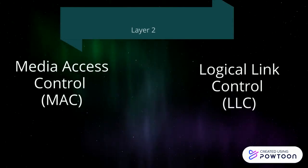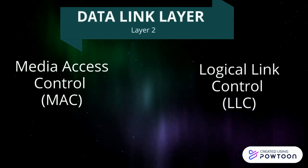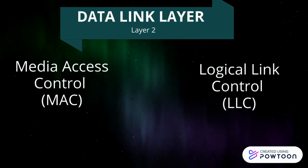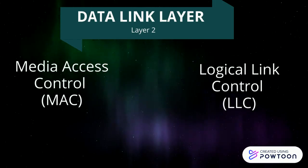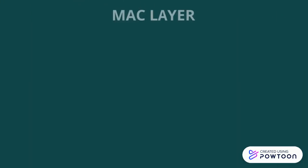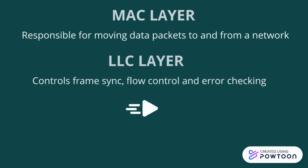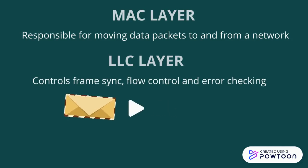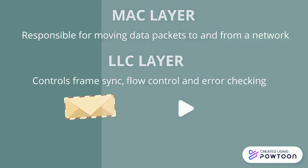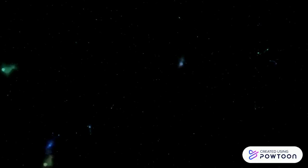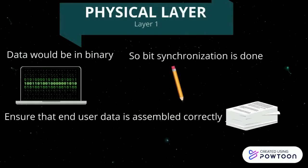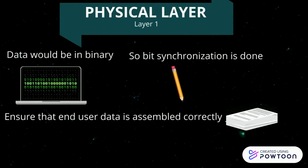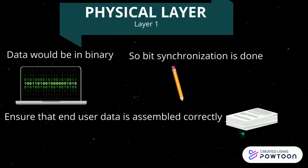The data is then moved to the data link layer, which is layer 2, where data packets are encoded and decoded into bits. This layer can be further divided into two segments. Then, in the physical layer, which is layer 1, the data is represented as 0s and 1s in binary. Bit synchronization occurs here, which ensures the end-user data is assembled correctly.